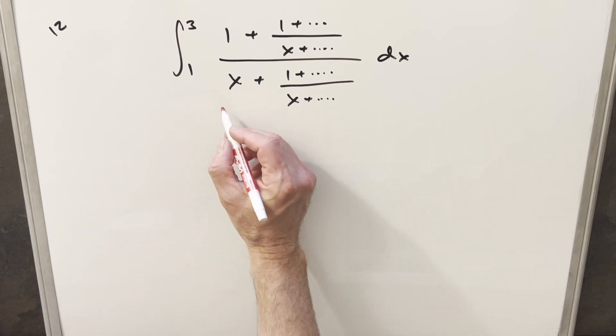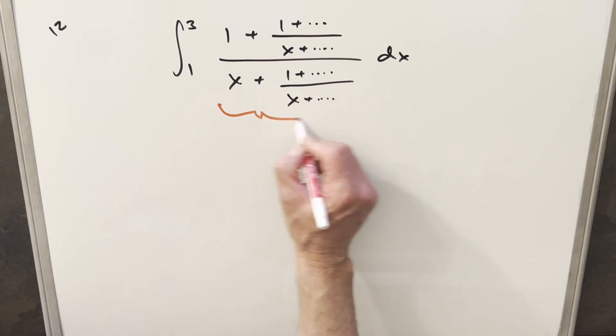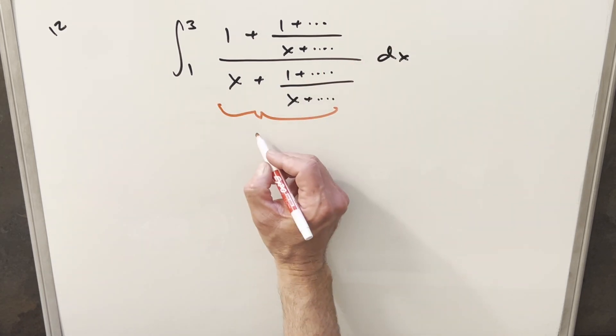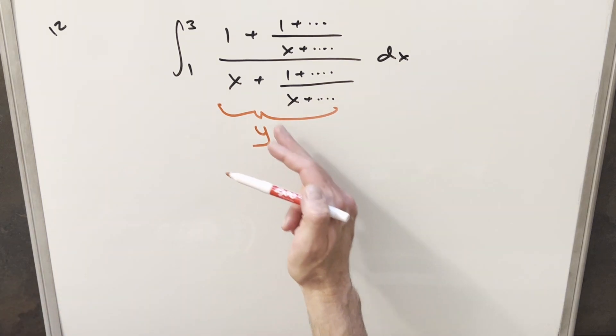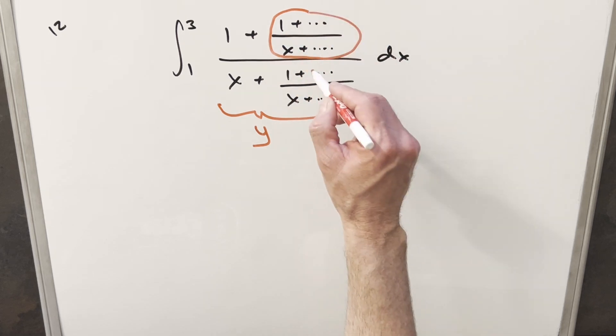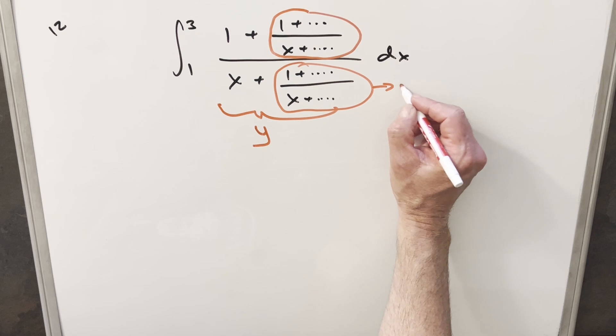So to get started with this, I want to use the same method I did last time with the infinite repeating expression. We usually want to do something to kind of simplify this or turn this into something we can work with. And what I like to do is just call the whole thing y. And what we can notice within y, we get the same thing repeating like this right here. Well, this is going to be the same thing as what we have here. But this is also the same thing as just the whole y.